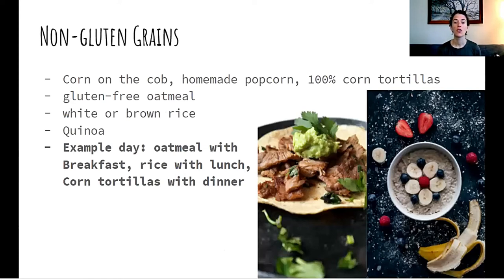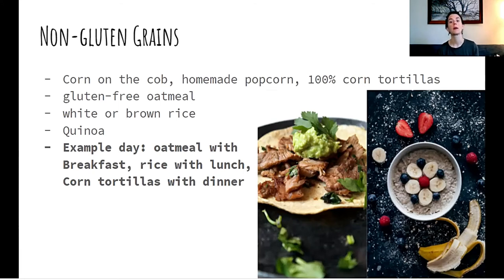Non-gluten grains include corn, oatmeal, white or brown rice, and quinoa. That could look like a tortilla with lunch, oatmeal with breakfast, and rice with dinner — doing a little bit of everything throughout the day within this category, then going back to the Whole30 for two days.